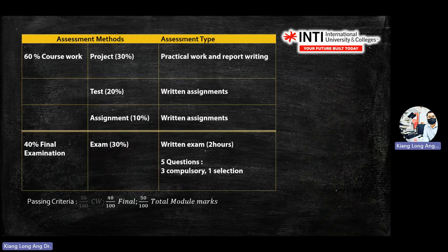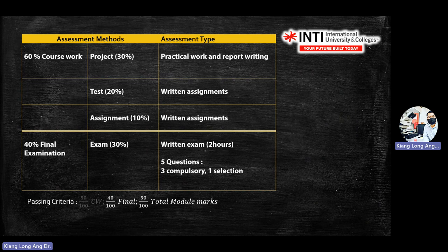The assessment components for this module are 60% coursework and 40% final exam. The final exam is a written exam, two hours, five questions — three compulsory and you choose one from questions four and five. Each question is 25 marks. Passing criteria: you need to score 40% in the final exam, and combined with coursework you need a total of 50%. The coursework project is a big component at 30%. I have 13 students, so I'll probably divide into two or three groups — you group yourselves.